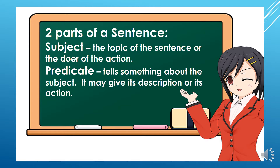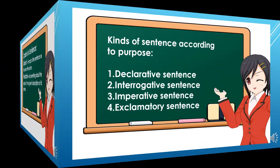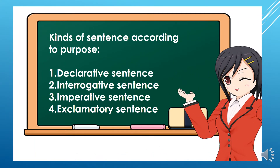There are two parts of a sentence: the subject and the predicate. The subject is the topic of the sentence or the doer of the action. The predicate tells something about the subject — it may give its description or its action. There are four kinds of sentences according to purpose: declarative, interrogative, imperative, and exclamatory.